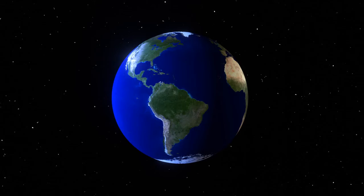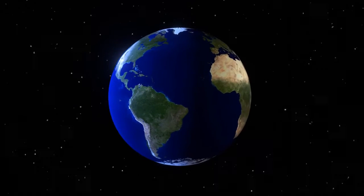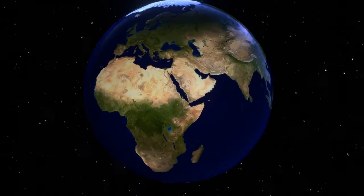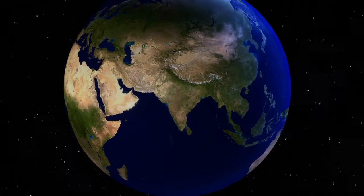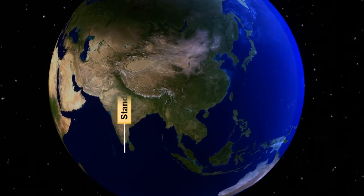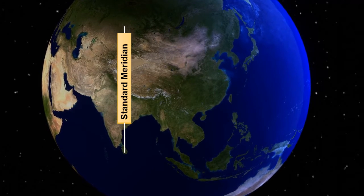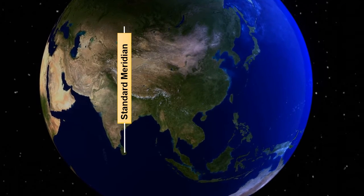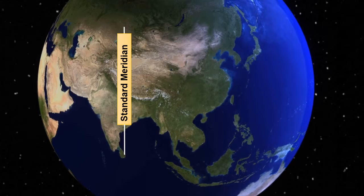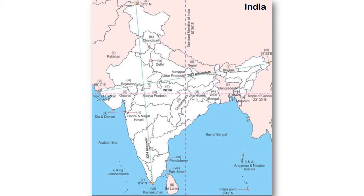Let's begin. A standard meridian is a longitude which is used to describe the time of a country. It ideally should be the same for the whole country, and all places in a country should follow this same time.